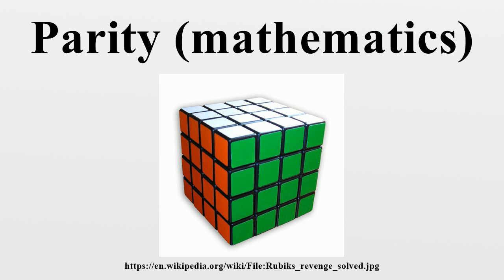In ring theory, let R be a commutative ring and let I be an ideal of R whose index is two. Elements of one coset may be called even, while elements of the other coset may be called odd. As an example, let R = Z be the localization of Z at the prime ideal; then an element of R is even or odd if and only if its numerator is so in Z.